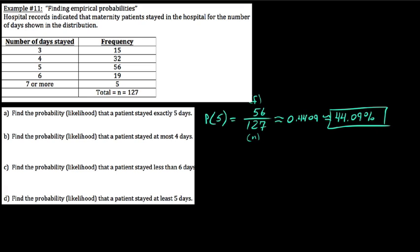0.4409, which is about 44.09%. So basically what this is saying is 44.09% of your respondents did stay five days. So that's the likelihood that that might happen in the future.